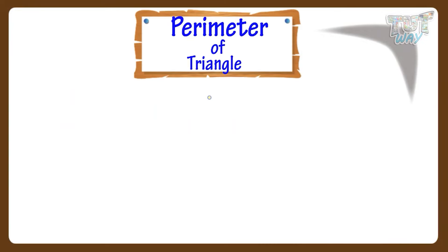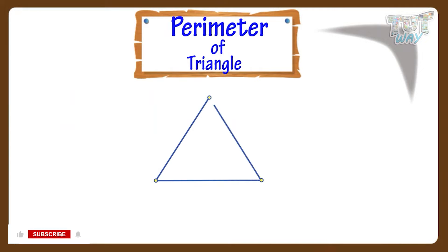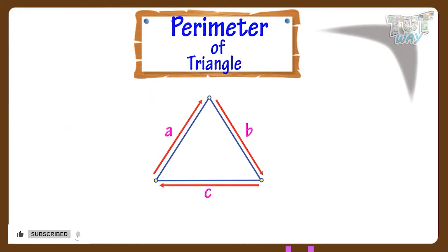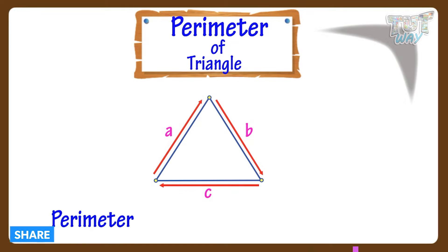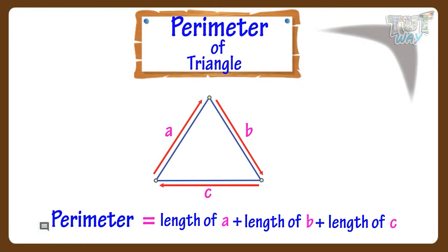Perimeter is the distance around the edges of a triangle. If we have to find the perimeter of a triangle, we just add up the lengths of all the edges of a triangle.